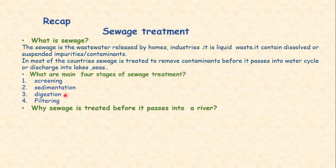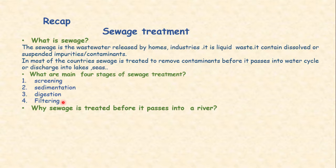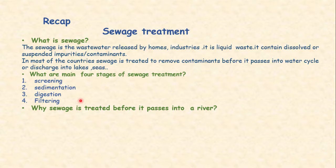In sedimentation, the suspended particles or impurities are allowed to settle at the bottom. In digestion, air is blown in, which helps bacteria to grow and eat up the waste inside the sewage treatment. After passing through these three stages, the fourth stage is filtration. The clarified water is passed through filters made up of different layers of sand, gravel, or charcoal. This water now has a low level of contamination and can be discharged into lakes and seas.